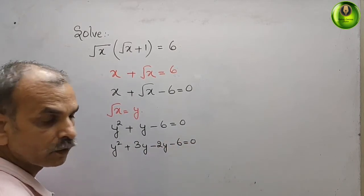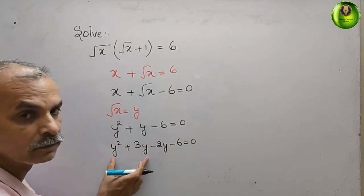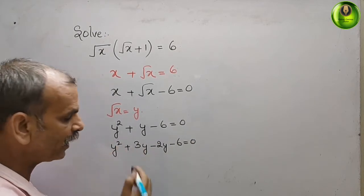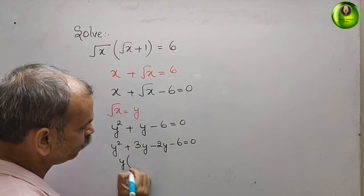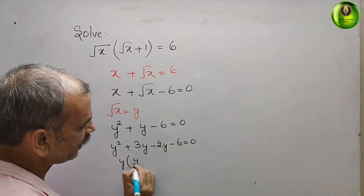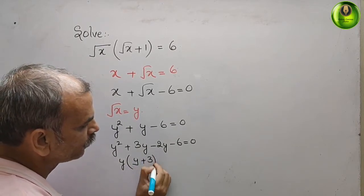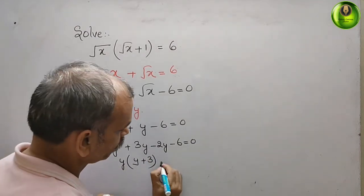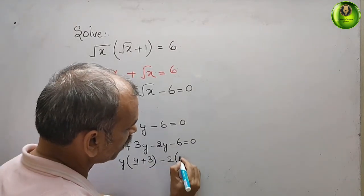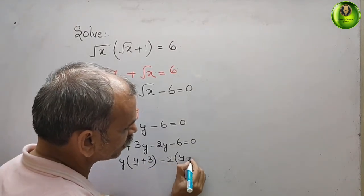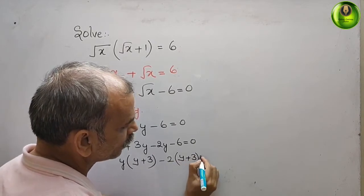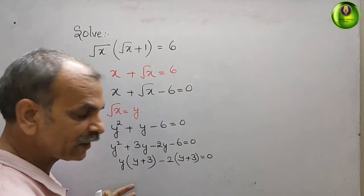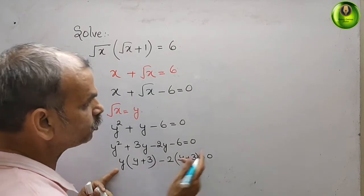Now factor by grouping. From the first two terms, y is common, giving y(y + 3). From the last two terms, -2 is common, giving -2(y + 3). So we get (y + 3)(y - 2) = 0.